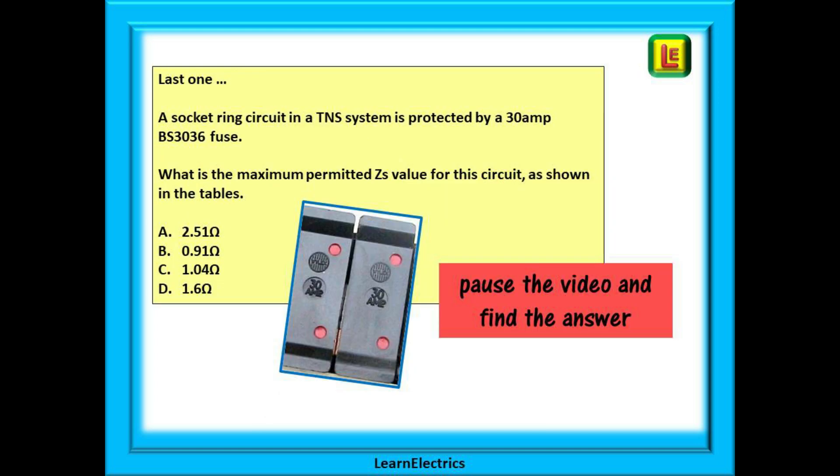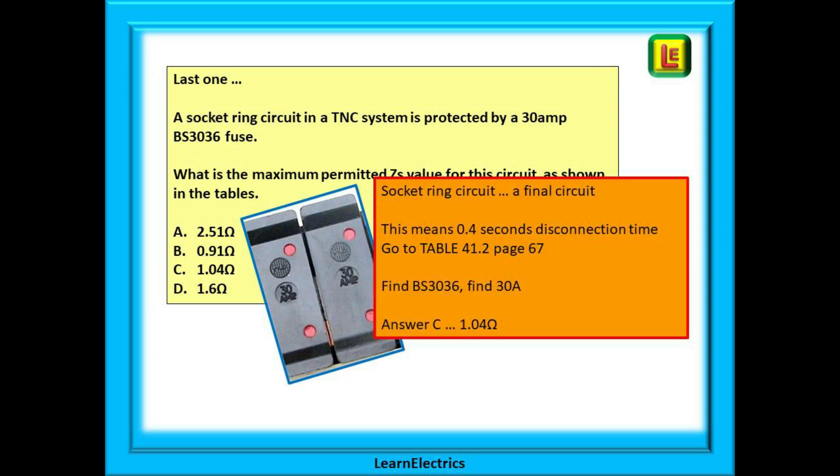And lastly this question. A socket ring circuit in a TNS system is protected by a 30 amp BS 3036 fuse. What is the maximum permitted ZS value for this circuit as shown in the tables? Pause the video and attempt this yourself. It's a socket ring circuit. This implies it is a final circuit. This then means 0.4 seconds disconnection time. Go to table 41.2 on page 67. Find BS 3036. Find 30 amps. And you should have answer C, 1.04 ohms.